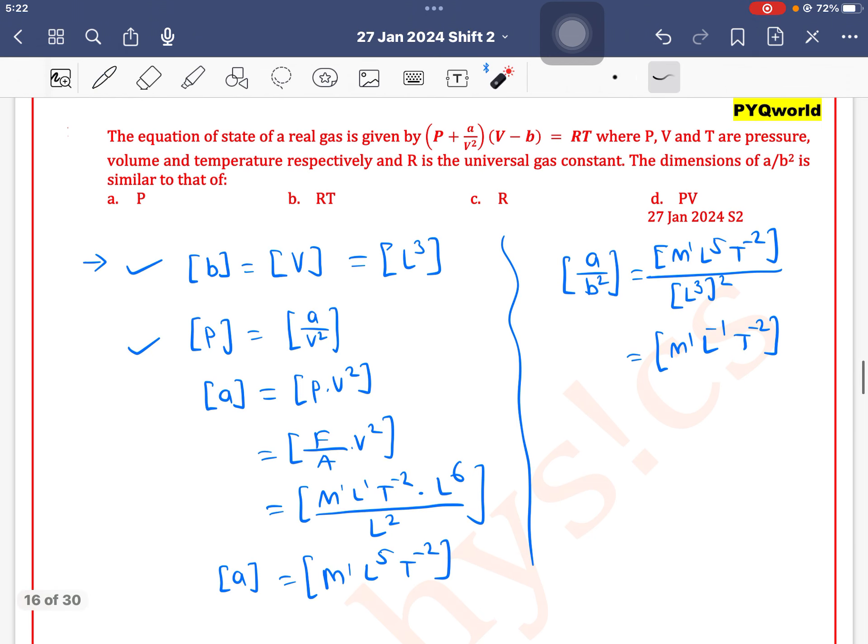So yeh kis kis saath match karta hai? First option hai P, second RT, third R, fourth one is PV. Let's check which option matches. Option A, dimension of pressure. Pressure is force upon area, so force upon area means M1 L minus 1 T minus 2. According to the data, dimension of A by B square is equal to dimension of pressure. Option A is the correct one.